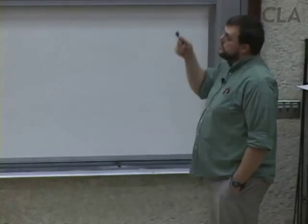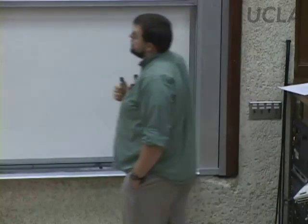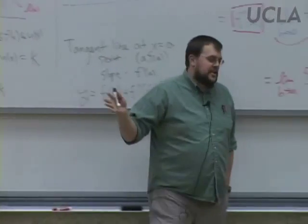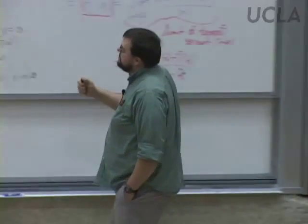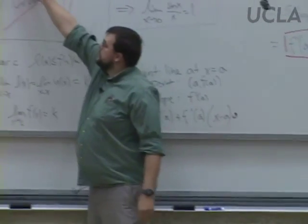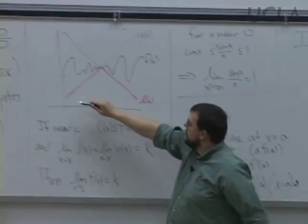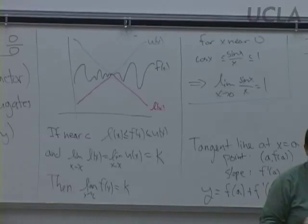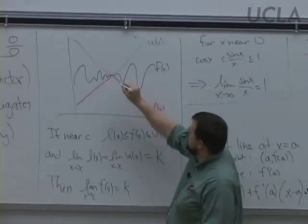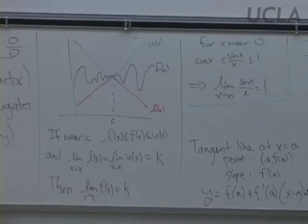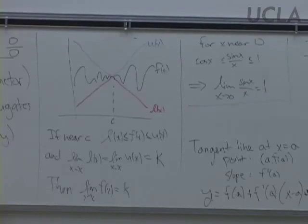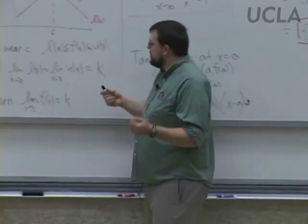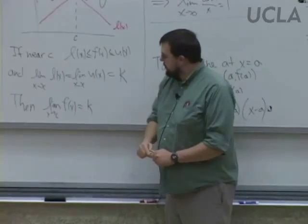That was manipulating limits. We're going to do some more of that today because we're going to be doing derivatives, and those involve limits. We also talked about the squeeze theorem — you could call it the squash, the squish, or the sasquatch, but that's probably not the right name. The idea is you have three functions: an upper function u(x), a lower function l(x), and a function f(x) that goes back and forth between them. If near c, f(x) is between the upper and lower functions, and the limits of both equal k, then the limit of f(x) also equals k.